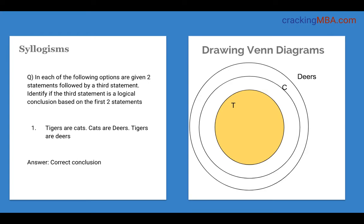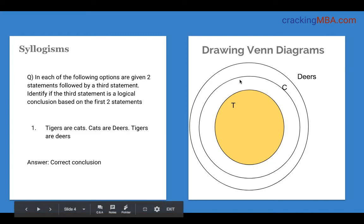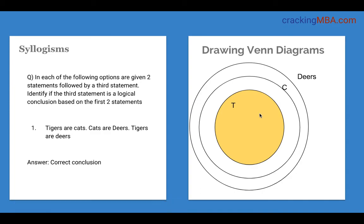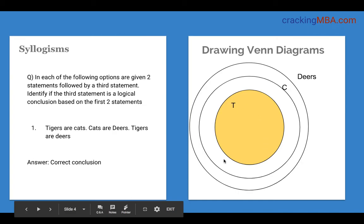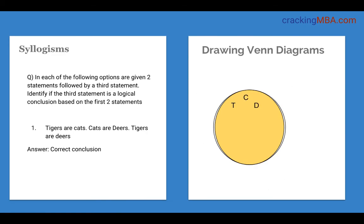Let's look at some examples of how to draw Venn diagrams and apply them to questions. The first example: tigers are cats, cats are deers — hence tigers are deers. On the right side, tigers are represented by the yellow circle, cats by the circle outside that, and deers by the outermost circle. We can use T, C, D to save time. We can see the entire T circle is within C, and C is within D, so we conclude T is within D — hence tigers are deers.